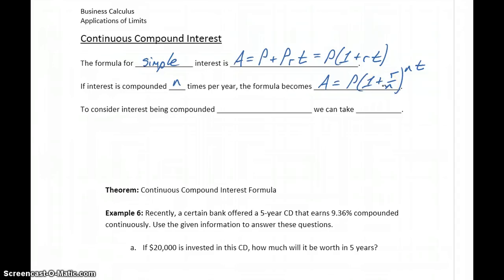So again, formulas you've probably seen in some previous courses. What we want to start considering now is interest being compounded continuously. So in order to consider interest being compounded continuously, we can take the limit of our formula for compound interest as n approaches infinity. So as our number of compounding periods approaches infinity.